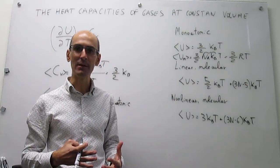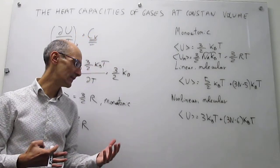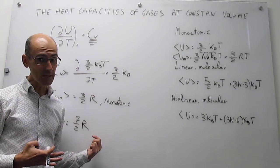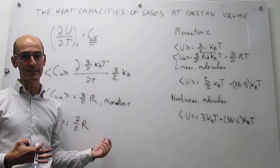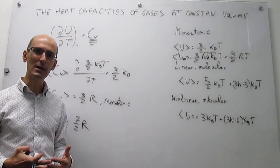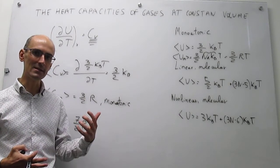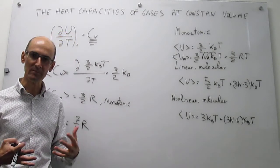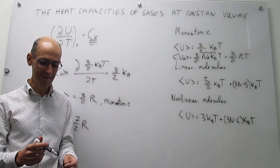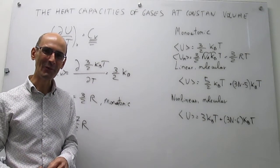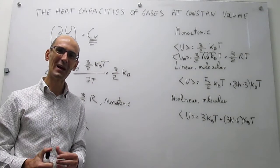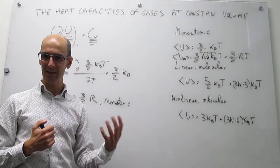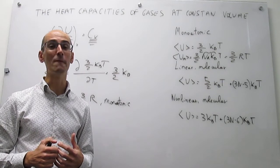When we work at regular temperatures like ambient temperatures, it sometimes happens that the predictions from the equipartition of energy principle tend to overestimate the heat capacities for molecules, because in some molecules you cannot activate the vibrations unless you have a minimum amount of energy, which depends on the molecule. With that, it's time to summarize: in this video we have seen how we can use the equipartition of energy principle to calculate heat capacities at constant volume for ideal gases.